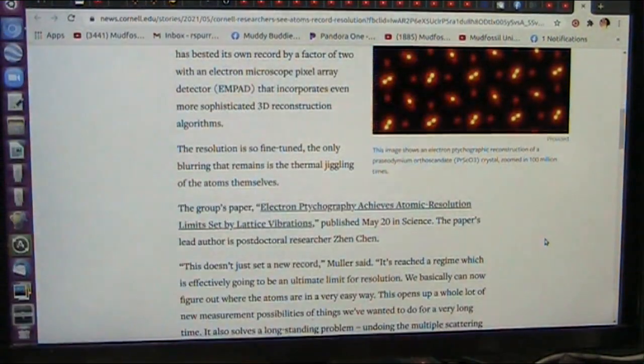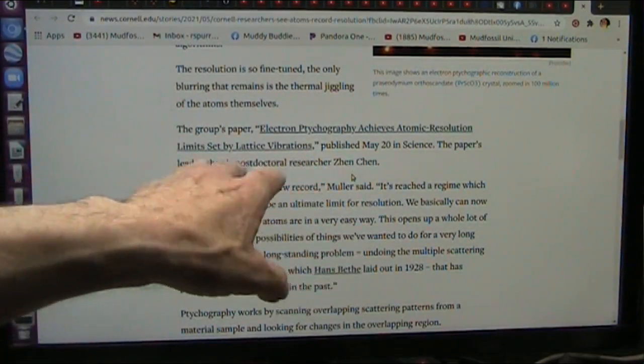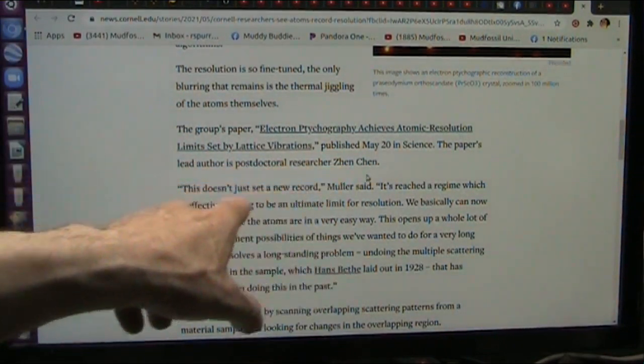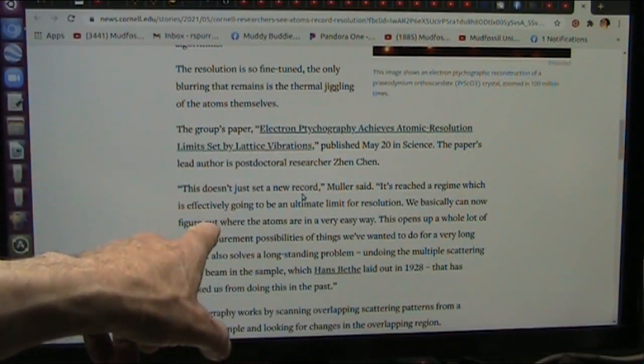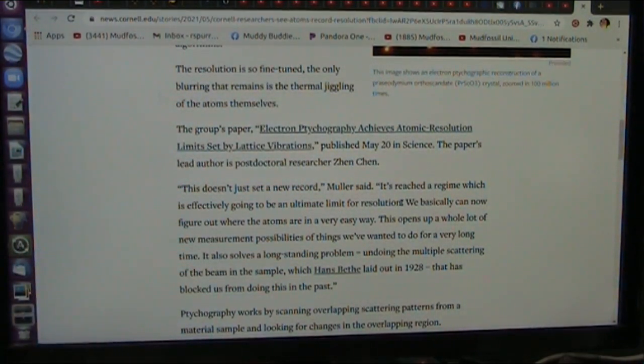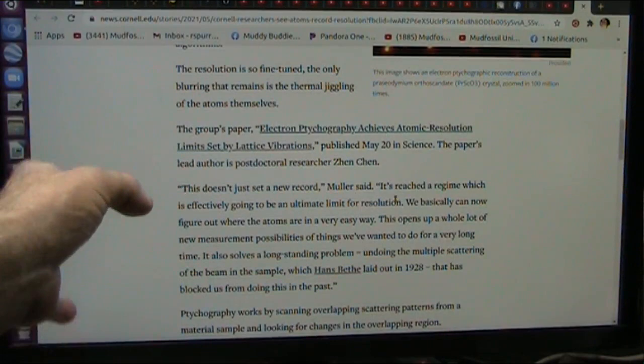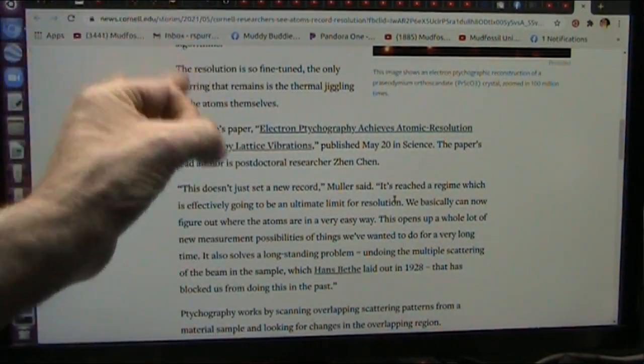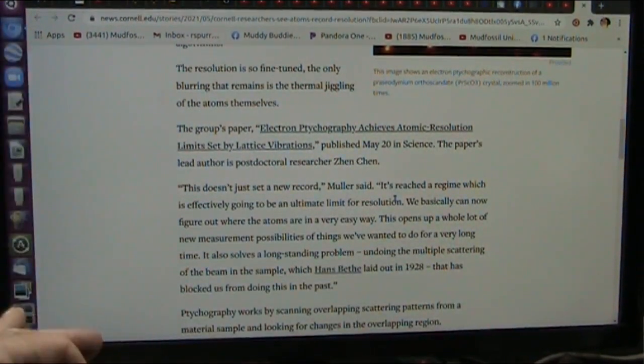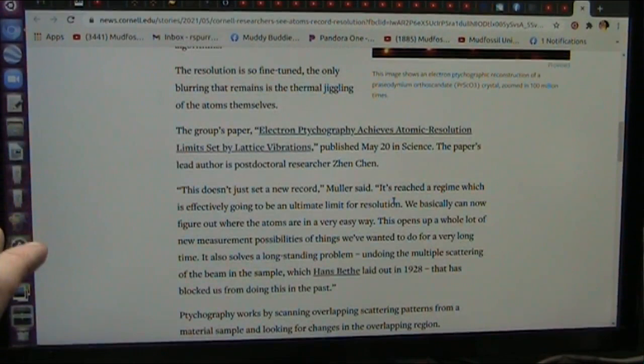Now, they are claiming that they have reached a new limit. And I got a contact with these people, all of them. I have them up there. Now, let's see if I get anything back from them. It says, the paper's lead doctoral, postdoctoral researchers, Zen Shen. This doesn't just set a new record. It reached a regime which is effectively going to be the ultimate limit for resolution. Now, they're saying that as much as their best they're going to see is atoms. No, we're seeing electrons. And we're seeing actual muons and electron showers, which are the bits of the electrons. That's what I'm seeing. If you could see it any other way, I want to know why I am saying these things that are wrong. Because I'll show you why I'm saying the things I'm saying.